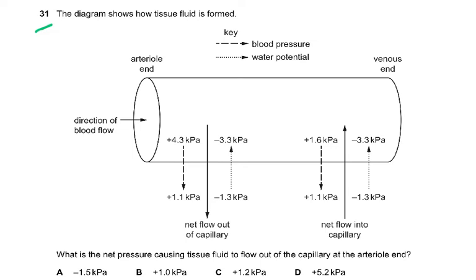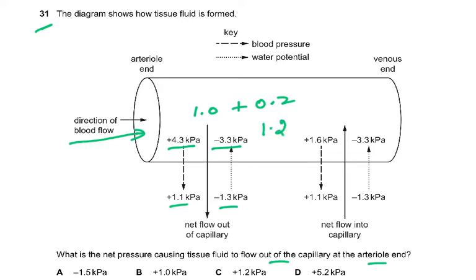Question 31. The diagram shows how tissue fluid is formed, with blood pressure and water potential given at the arterial end and venous end. What is the net pressure causing tissue fluid to flow out of the capillary at the arterial end? 4.3 minus 3.3 is 1.0, and 1.3 minus 1.1 is 0.2, so add them together: it is 1.2. The answer is C.